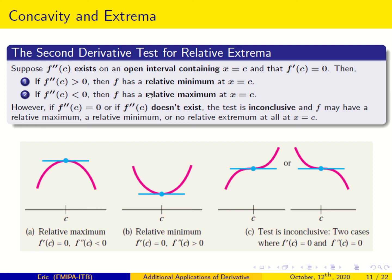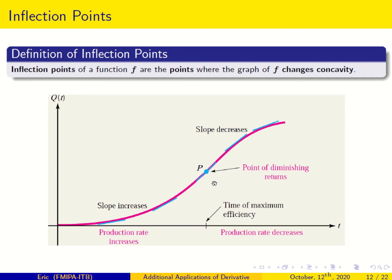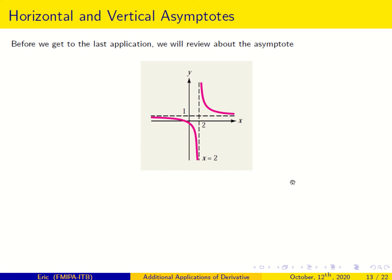Now, regarding inflection points: an inflection point is defined as a point where the graph of f changes concavity — for example, from concave upward to concave downward. The reverse can also happen, from concave downward to concave upward. That is all for the topic of concavity.